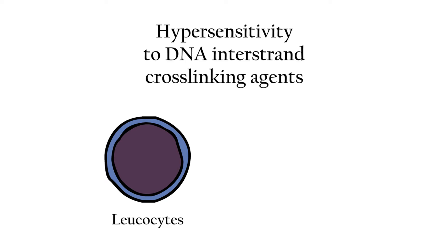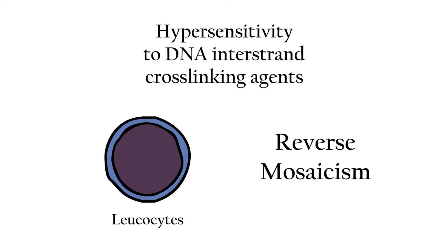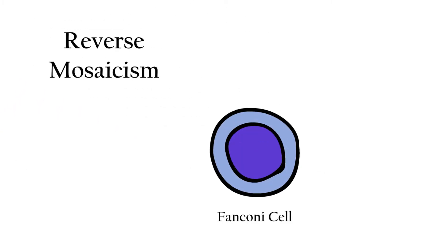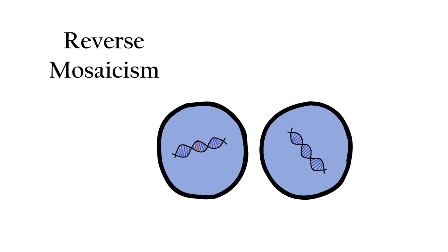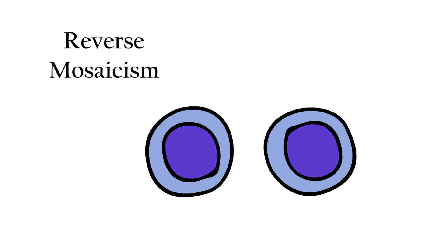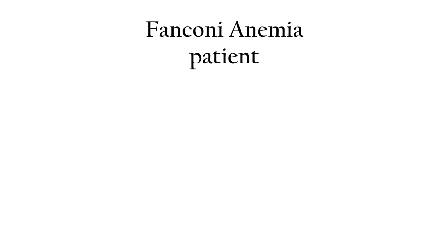However, in some patients a phenomenon that makes diagnosis difficult takes place. This phenomenon is called reverse mosaicism. In reverse mosaicism, a hematopoietic cell undergoes a new mutation that corrects a previous Fanconi anemia mutation. This corrected cell can grow in the bone marrow and give rise to healthy blood cells. This cell has recovered from the disease. Hence, we may be facing a Fanconi anemia patient but at the same time be unable to diagnose the disease because we are testing healthy cells.